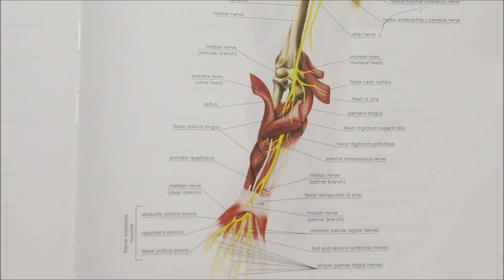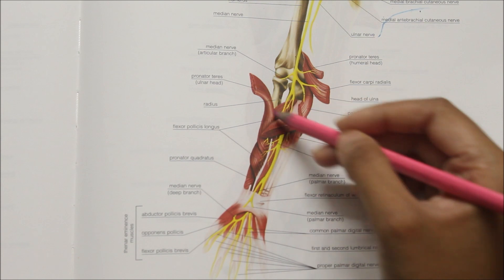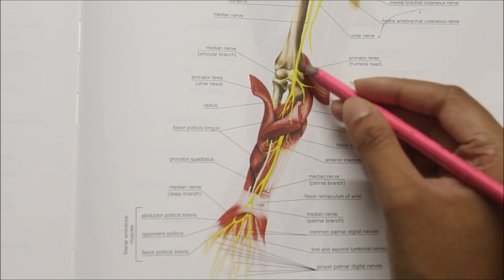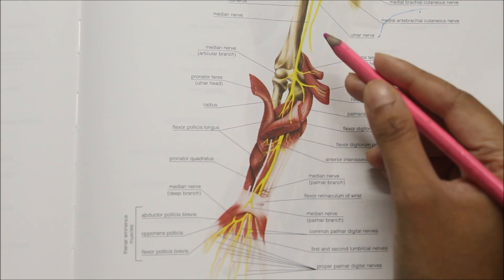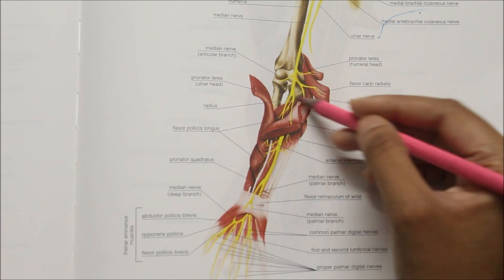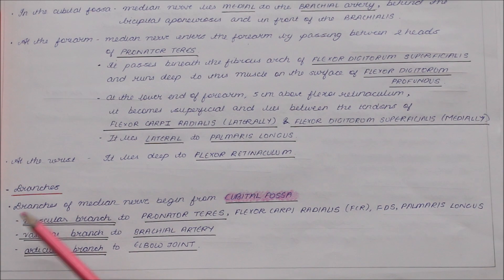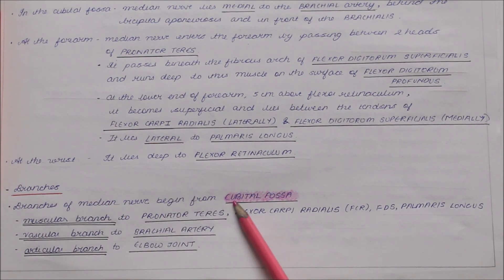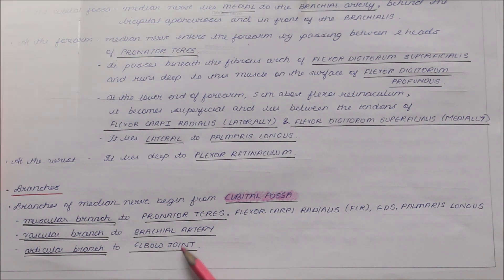Moving on to the branches of the median nerve: the branches begin from the cubital fossa. It gives a muscular branch to the pronator teres, a vascular branch to the brachial artery, and an articular branch to the elbow joint.